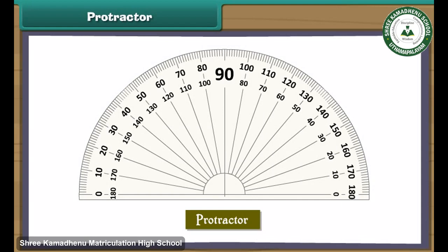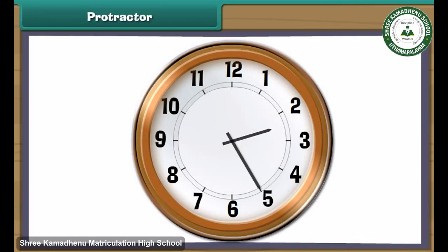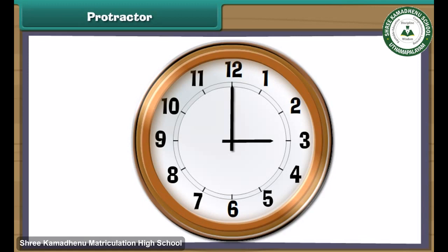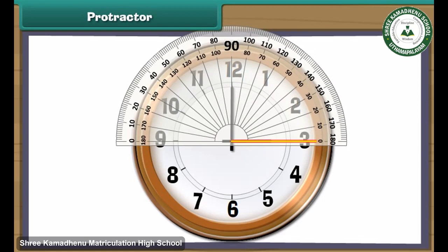A protractor is a semi-circular geometric instrument with degrees marked from 0 to 180. Let us measure the angles made by the hands of a clock. This clock shows 3 o'clock — the long hand is on 12 and the short hand is on 3. Place the protractor on the short hand of the clock. The horizontal line at the bottom must coincide with it and the midpoint must rest on the common point where both hands meet. Read the inner marking on which the long hand rests — it is 90 degrees.